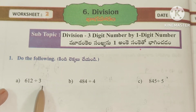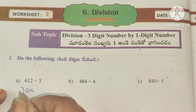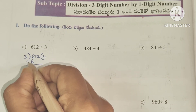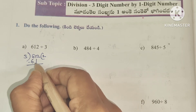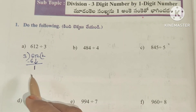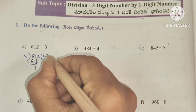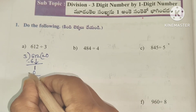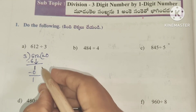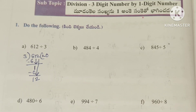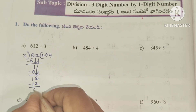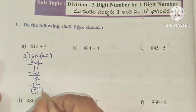Worksheet 2, do the following. A: 612 divided by 3. First, 3 twos are 6, after subtracting 0 remains. Next number 1 comes down — 1 is smaller than 3, so we write 0 in the quotient. Next number 2 comes down making 12. In the 3 times table, 3 fours are 12, remainder 0. So 612 divided by 3 equals 204.